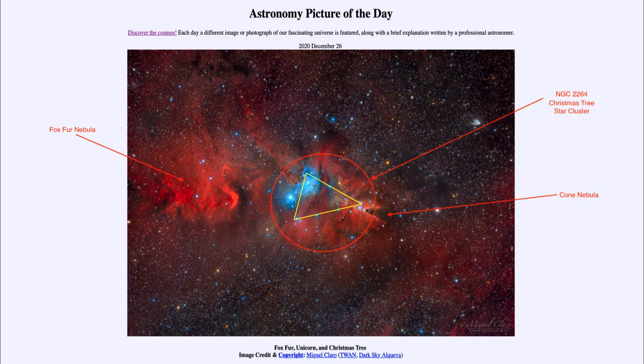But if we look there, you can imagine the apex of the tree being right by the edge of the cone nebula. And then the two sides are spreading diagonally outward opposite the cone nebula. And then the bright star is kind of the base of the tree. And that bright star is known as S. Monoceros.